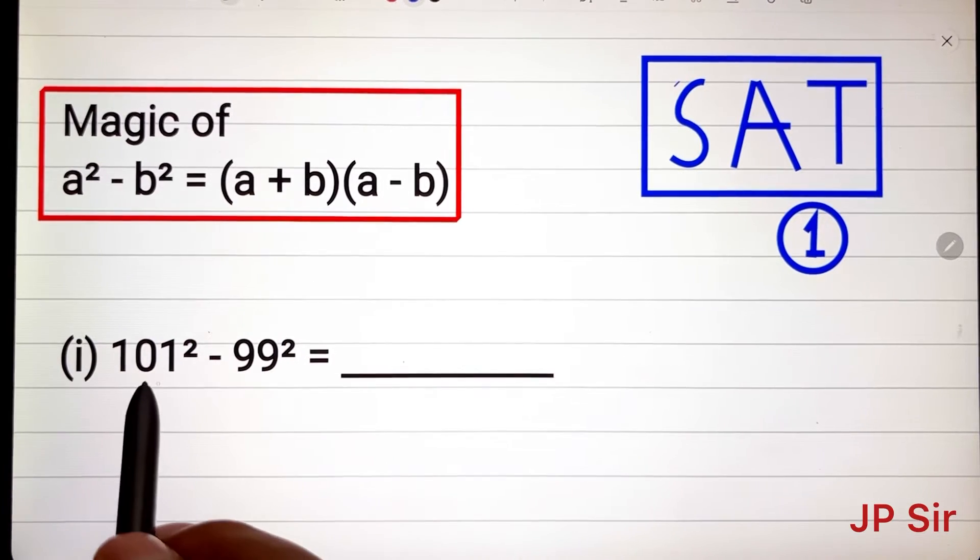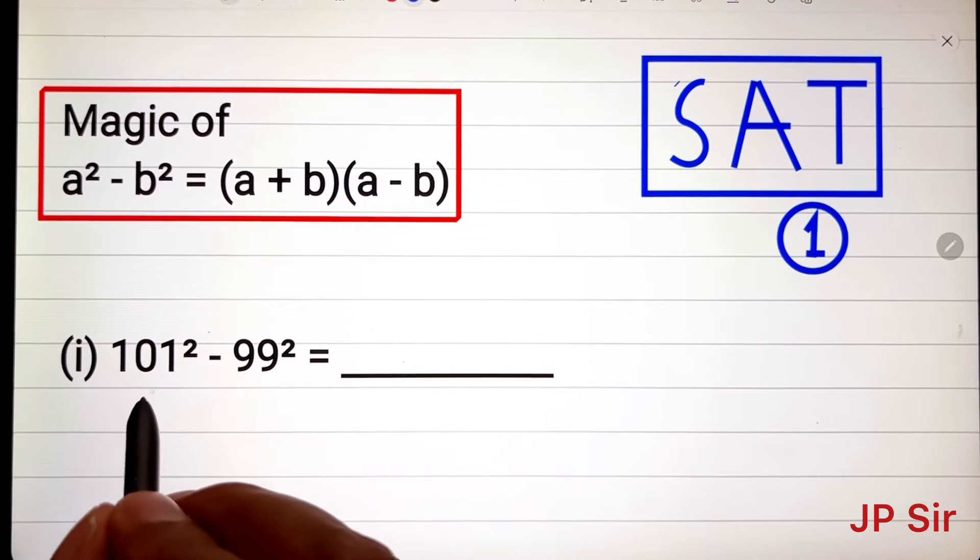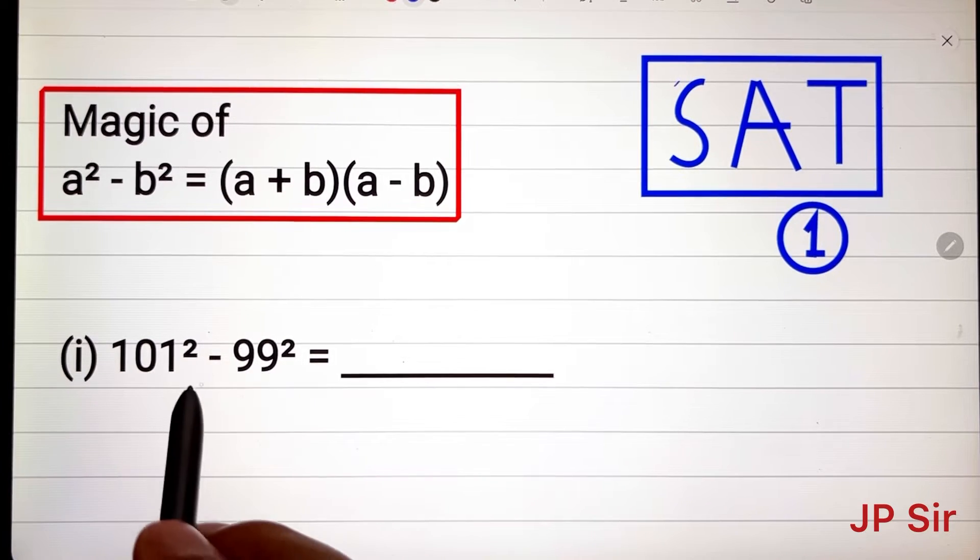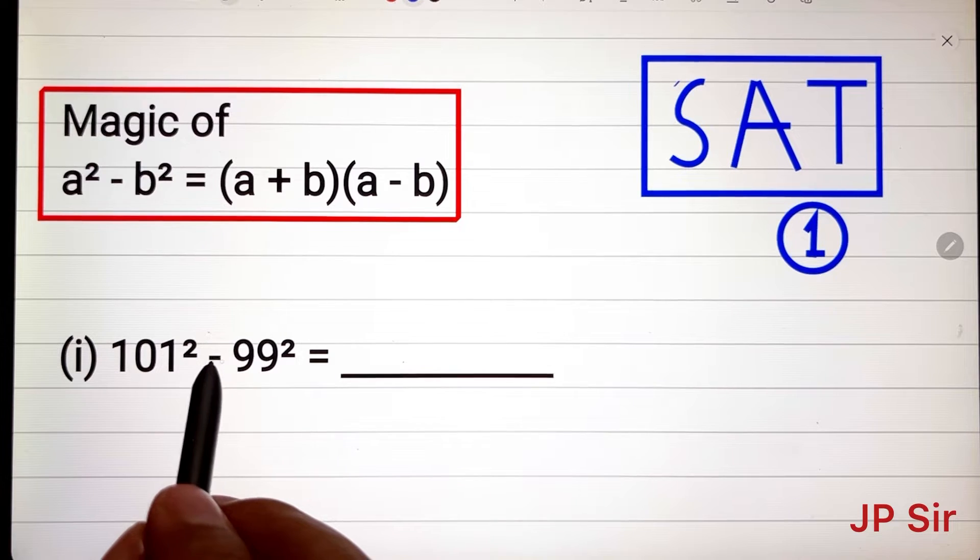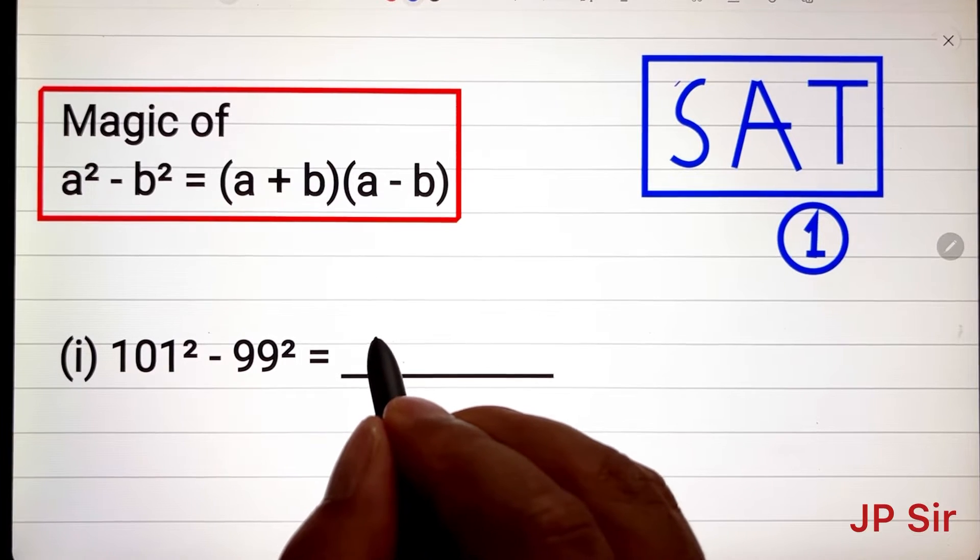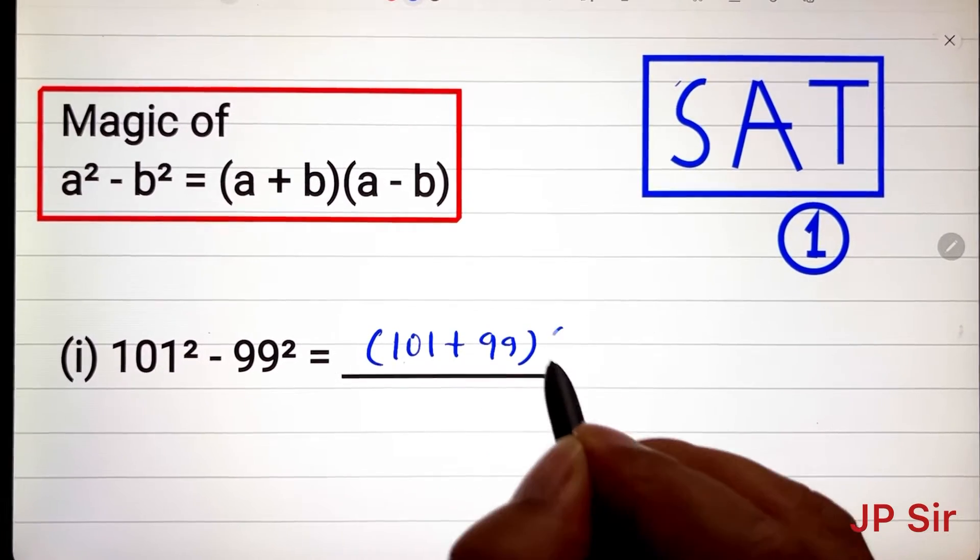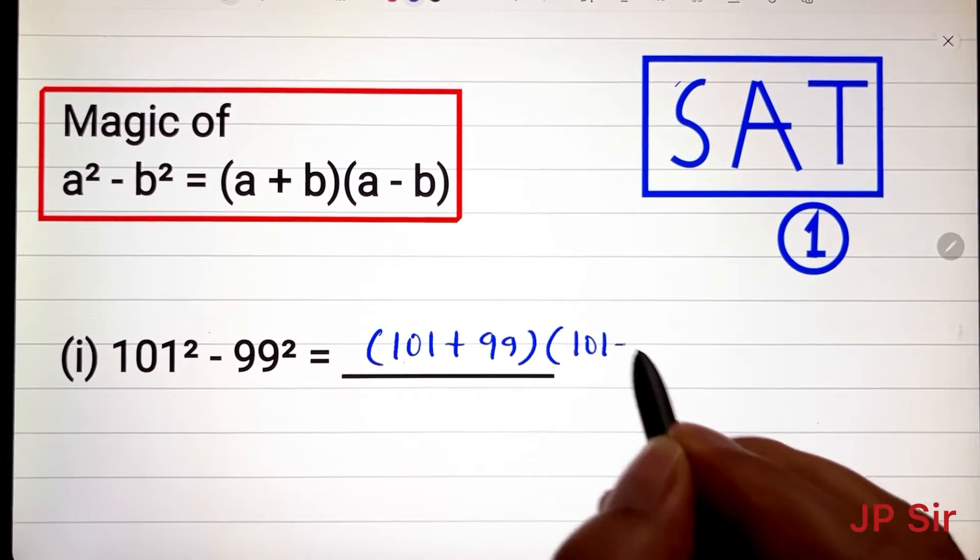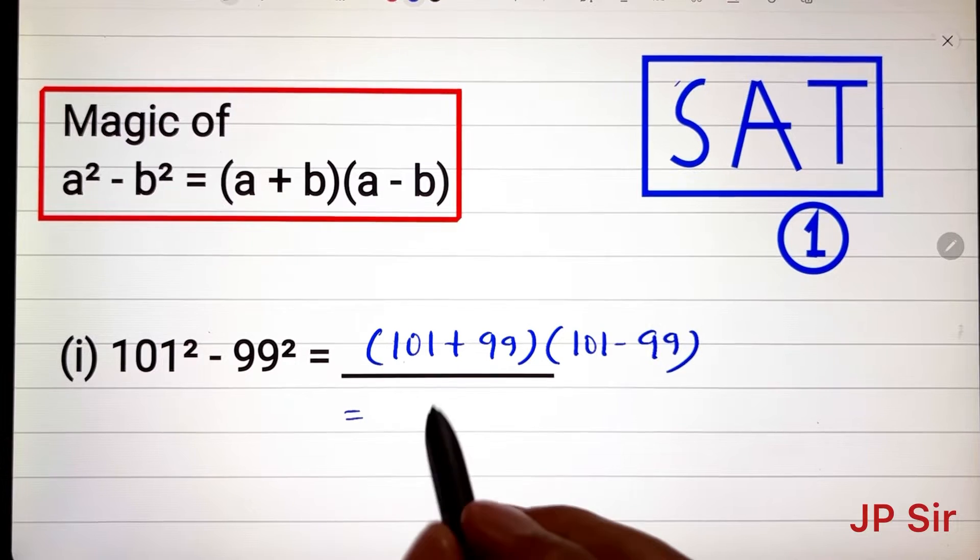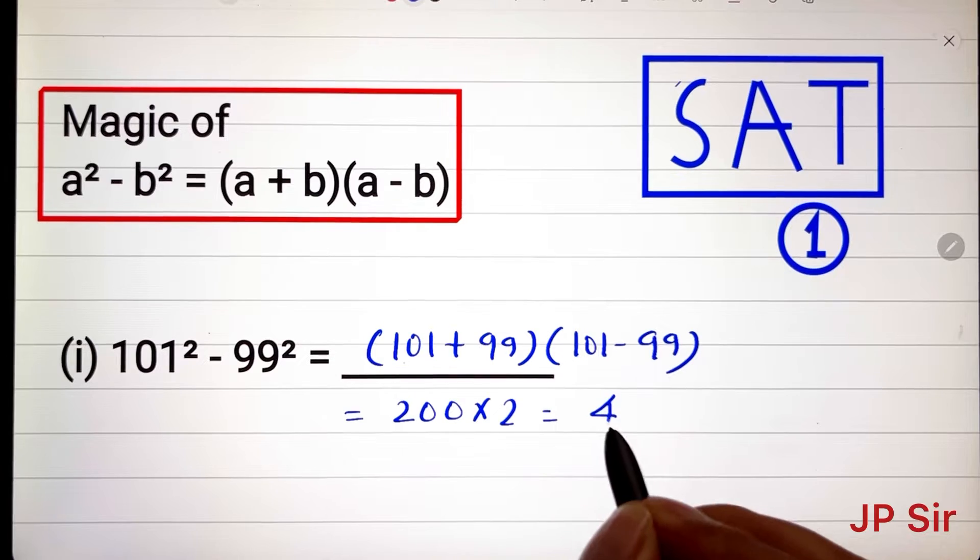So applying this formula, how to find the solution of this, how to find the value of this? Simply you can see that we have two numbers squared and there is a negative sign here, they are in subtraction. So what we do: first we add them, 101 plus 99, then we subtract. And what do we get? It's 200 times 2 and the answer is 400.